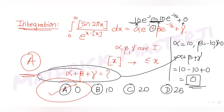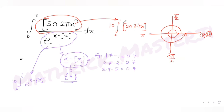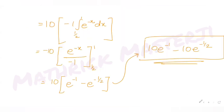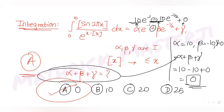I hope you understood how to solve this type of question dealing with integrals and the greatest integer function. We analyzed ⌊sin(2πx)⌋ on the numerator and denominator, split the limits from 0 to ½ and ½ to 1, and found α + β + γ = 0. I'll see you tomorrow with another question from our JEE Mains series. Please like, subscribe, and share these videos with friends preparing for JEE.